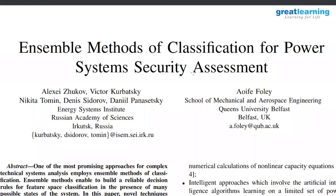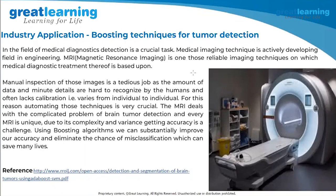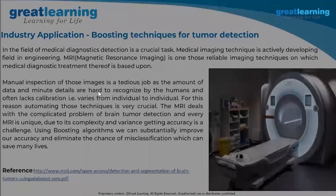Another example: boosting techniques for tumor detection. Since they want to identify tumors, manual inspection of medical images is a tedious job — the amount of data and minute details are hard to recognize by humans, and it varies from individual to individual. What they have done is taken a number of images, built boosting techniques, and from the boosting technique calculated the propensity score for a given patient to have a tumor from the images. These are two real-time industry application examples.